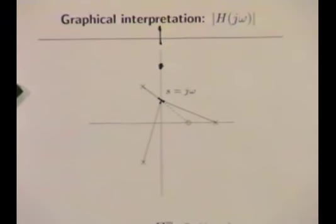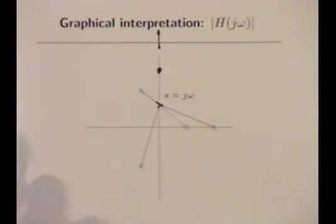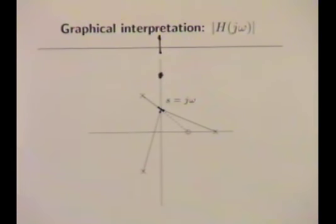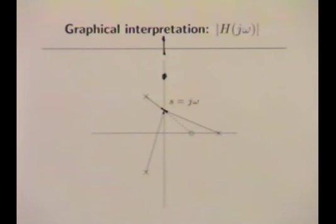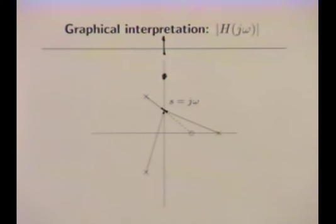Today we'll finish up our discussion of Bode plots of frequency responses. I'll start by reviewing the two fundamental things it's based on. One is that the Bode plot of a product is the sum of the Bode plots. That's because the log magnitude and phase are the complex logarithm. So whenever you have a transfer function you can factor, you can figure out the Bode plots of each term, then assemble everything by adding to get the Bode plot of the whole thing.